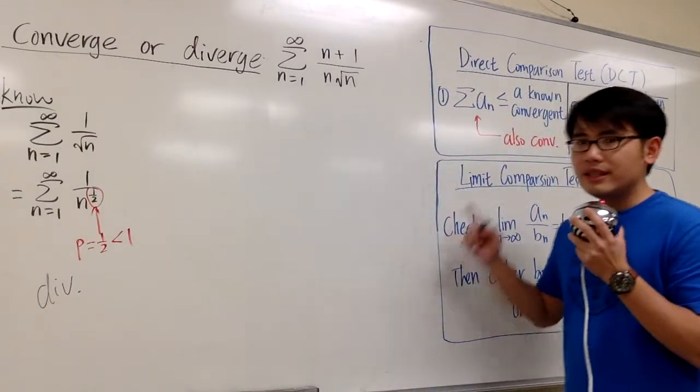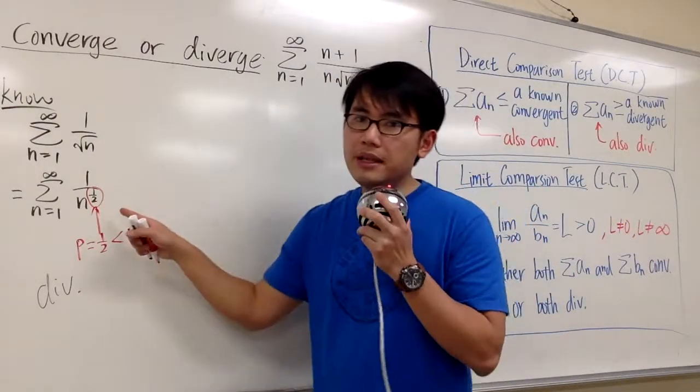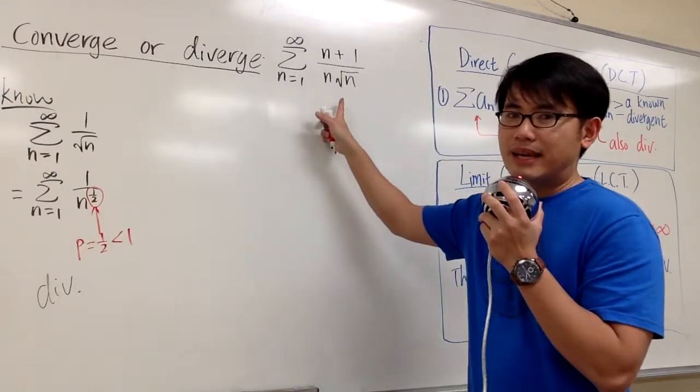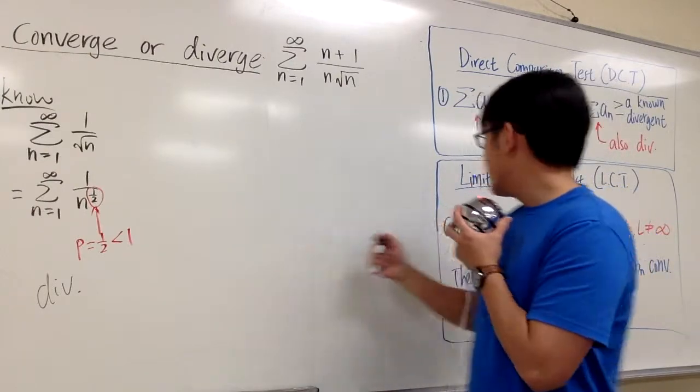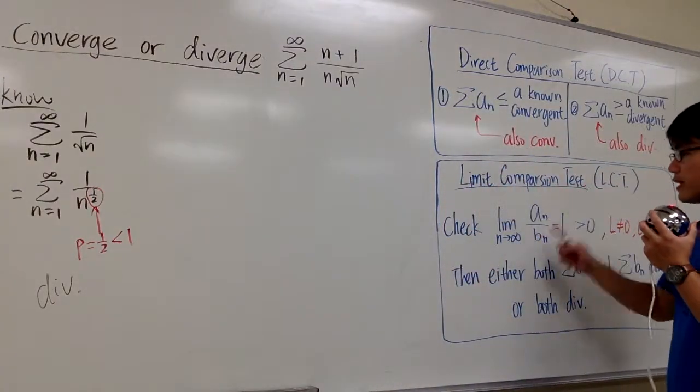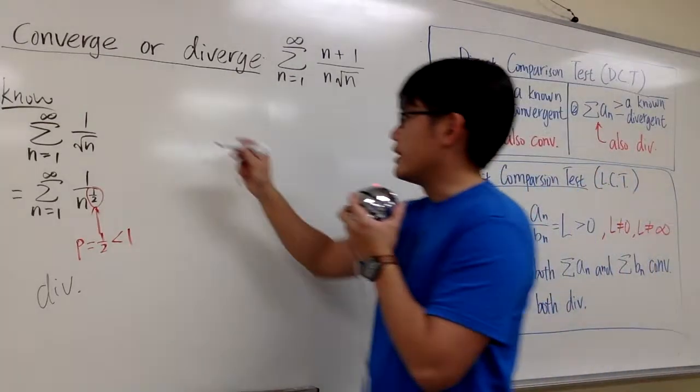And then we are going to run through the limit comparison test. I will take this as my b_n, and this right here as my a_n. And you will see that the square root of n will cancel each other out. And then, once again, for the limit comparison test, we are going to check the limit as n goes to infinity, and let's go ahead and do that.